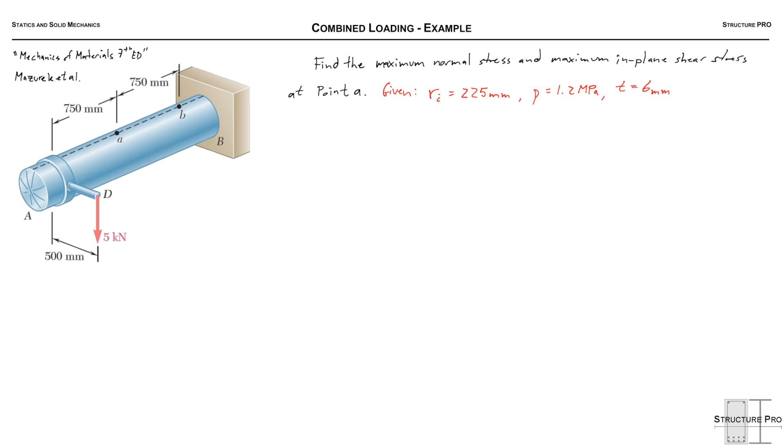So we're given this cantilevered beam that's also a pressure vessel with this 5 kN force pulling down at D. We're given that the inside radius of this vessel is 225 millimeters, the pressure inside it is 1.2 MPa, and the thickness is 6 millimeters.